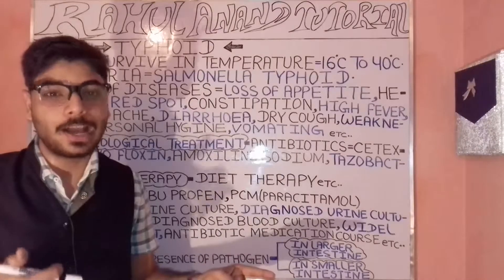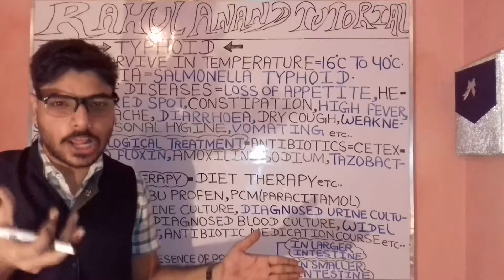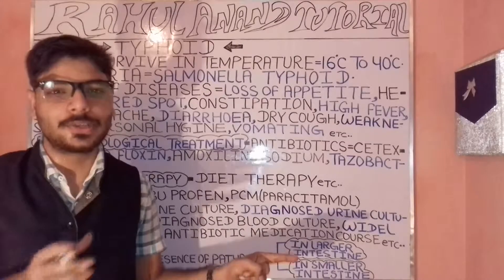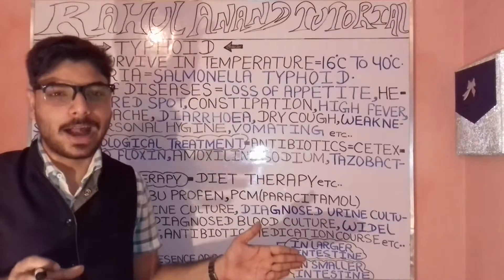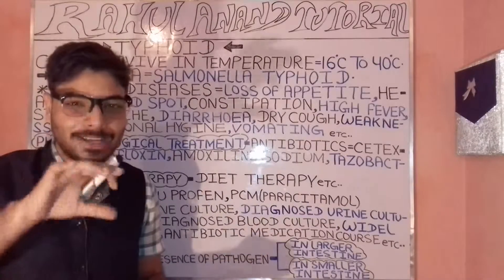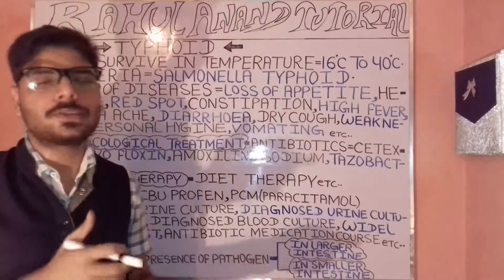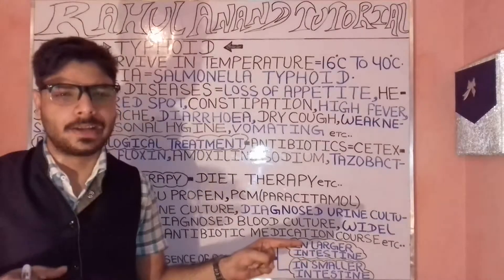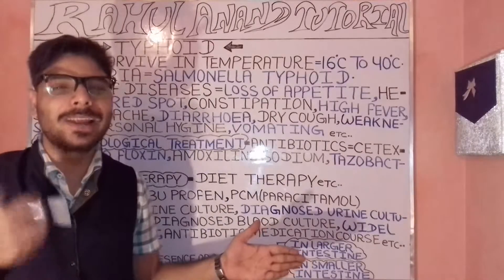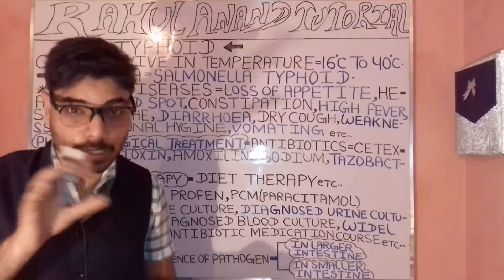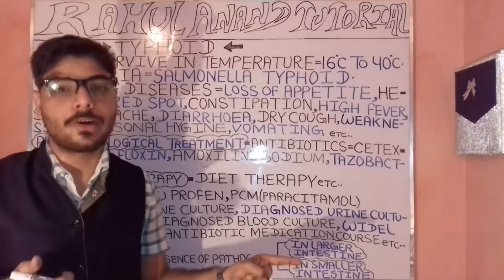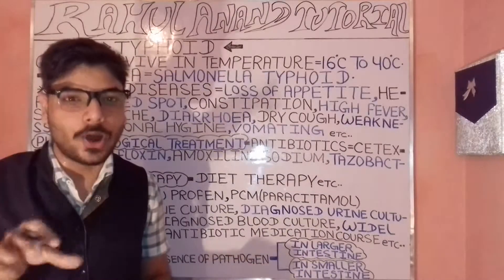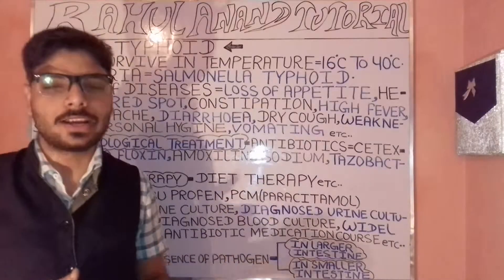In pneumonia, there is accumulation in the alveoli. The alveoli are micro structures attached to bronchioles on one side and to micro-capillaries on the other. They play an important role in carrying oxygenated and deoxygenated blood and in carrying out the process of respiration.